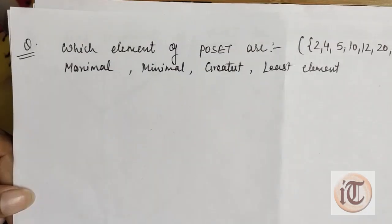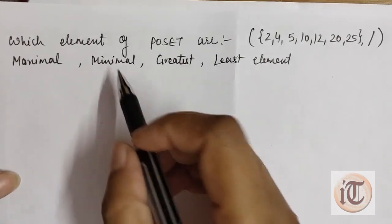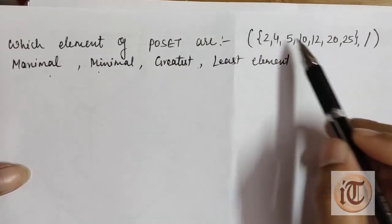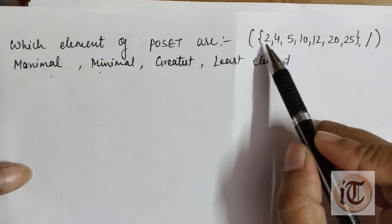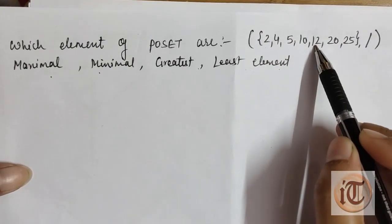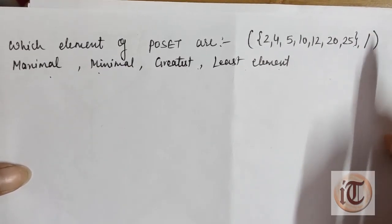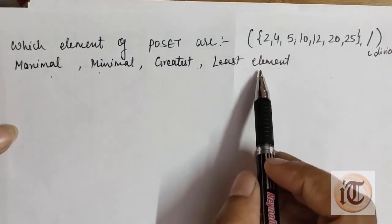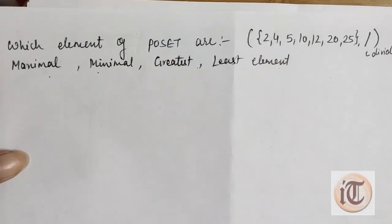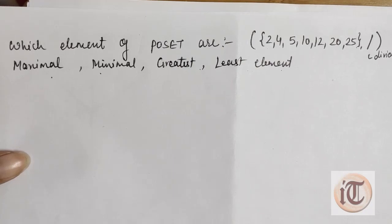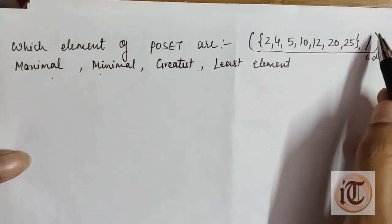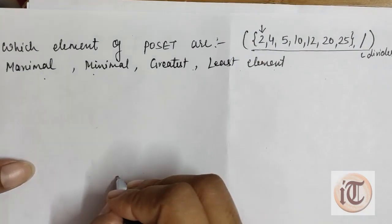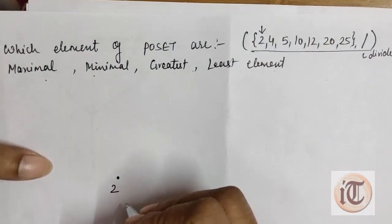Now we take one example. The question is: which elements of this poset are maximal, minimal, greatest, and least? The poset has set {2, 4, 5, 10, 12, 20, 25} with the 'divides' relationship. To find all four components, first we draw the Hasse diagram directly for this divisibility relation. We start with the first element, 2, which is the initial or bottom element.